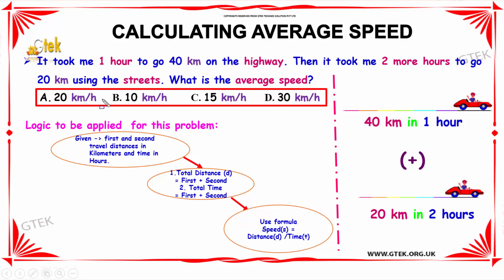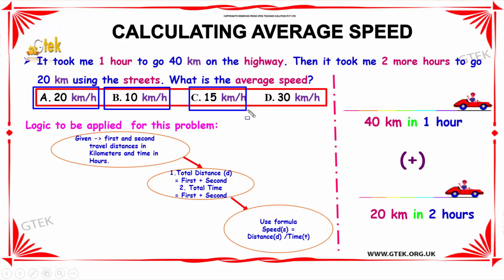The given options are: option A is 20 km per hour, option B is 10 km per hour, option C is 15 km per hour, and option D is 30 km per hour.